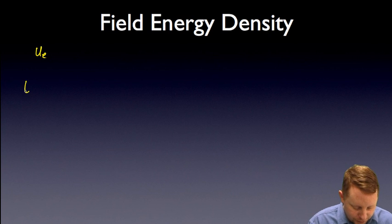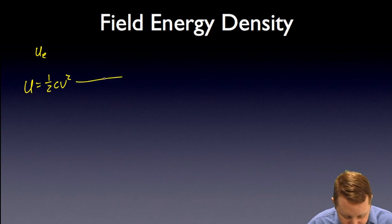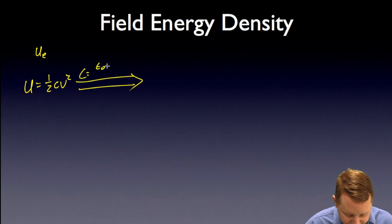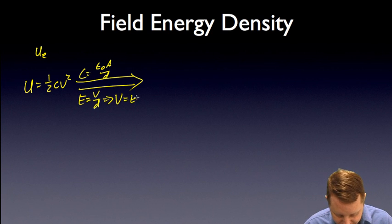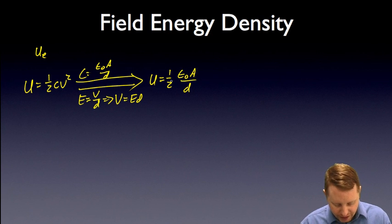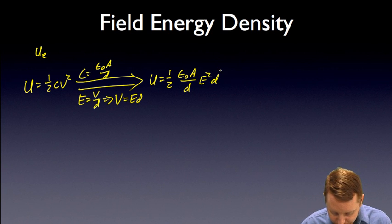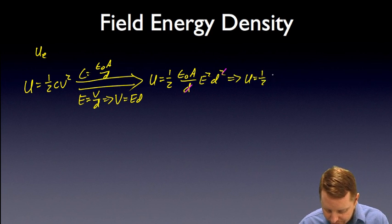So if we wanted to derive this a little bit further: U equals one half CV squared — we just proved that. But we also know that C equals ε₀A over D, and if the electric field is the potential difference divided by the distance D, then we could say the potential V equals ED. With a couple substitutions, U is going to be equal to one half times (ε₀A over D) times E squared D squared.